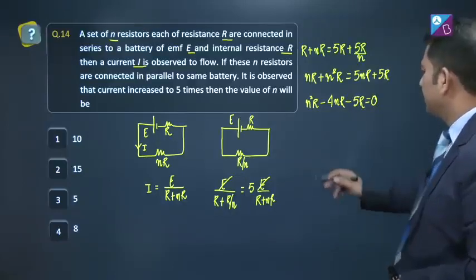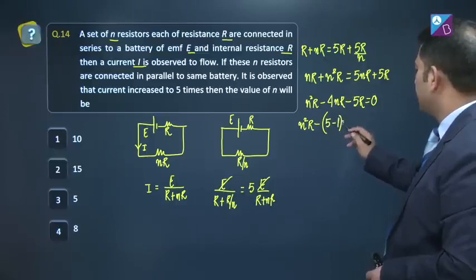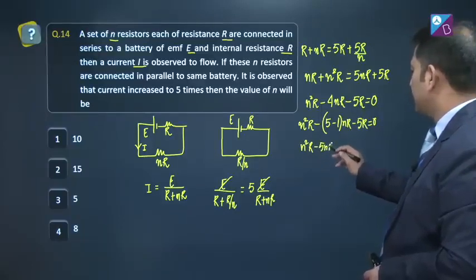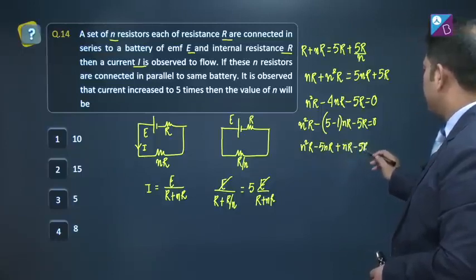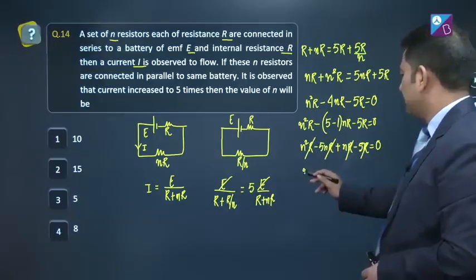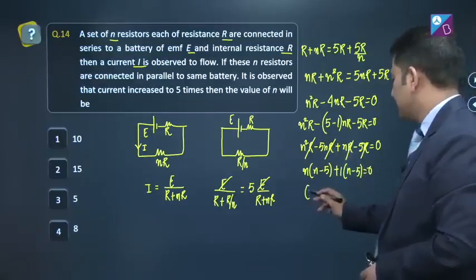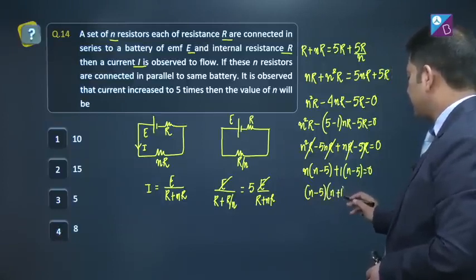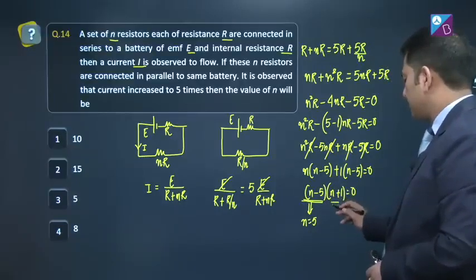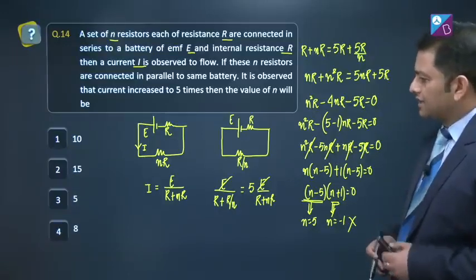E and E gets cancelled. Let's solve: r plus of n capital R is 5r plus 5r by capital n. Further solving gives n r plus n square multiplied by r equals 5n r plus 5r. This becomes n square r minus 4nr minus 5r equals 0. This gives n square r minus 5nr minus 1nr minus 5r equals 0. R cannot be 0, so we cancel it: n minus 5 multiplied by n plus 1 is 0. This gives n equals to 5, and the other possibility gives n equals to minus 1, which is impossible. The number cannot be negative, so n of course is 5, option number 3.